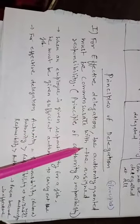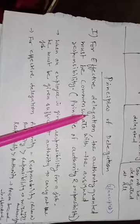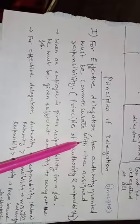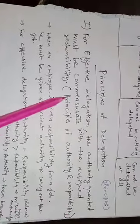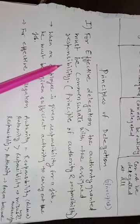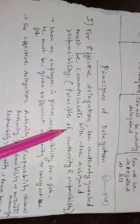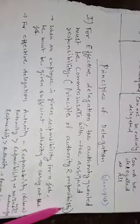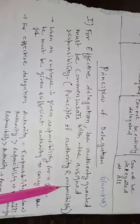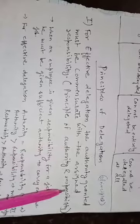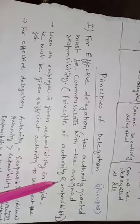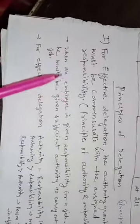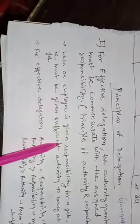For effective delegation, the authority granted must be commensurate — meaning equal — to the assigned responsibility. There must be a balance between authority and responsibility, as explained by the principle of authority and responsibility. If there is more authority than responsibility, a person or manager may misuse the authority.